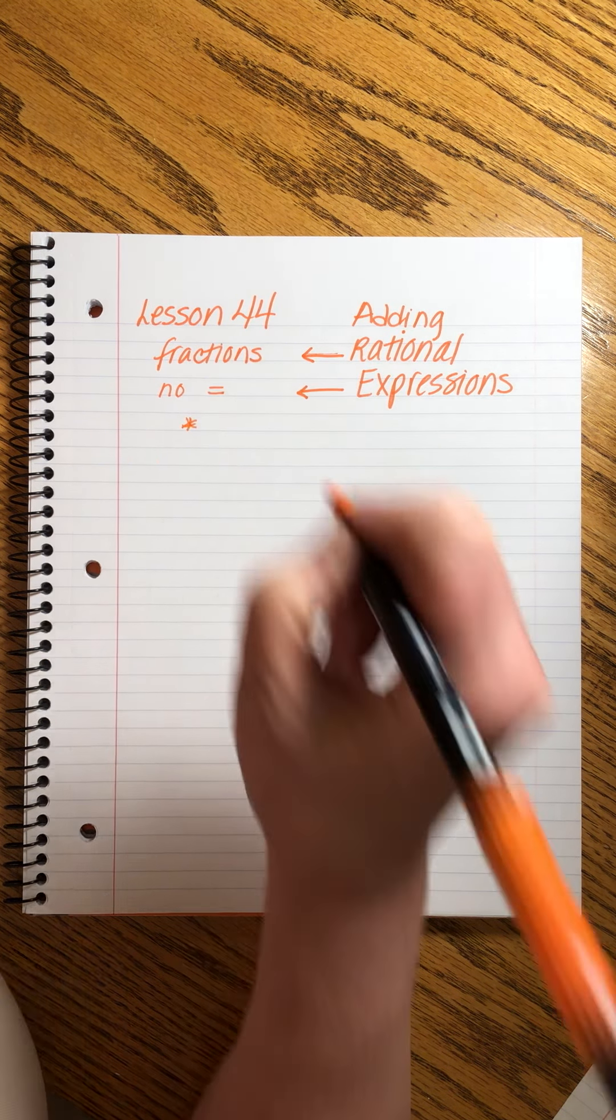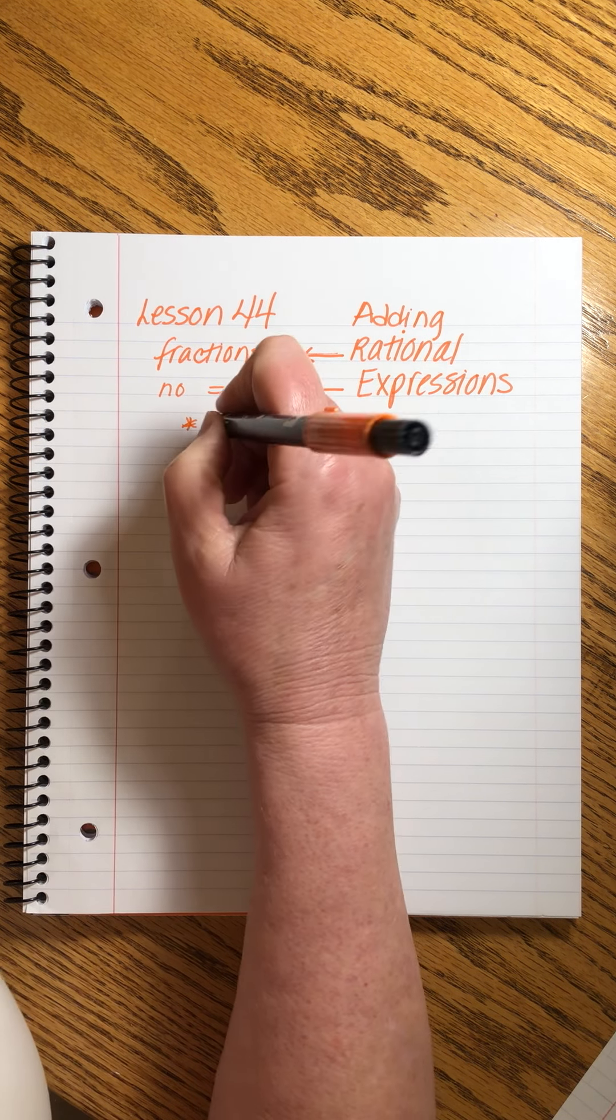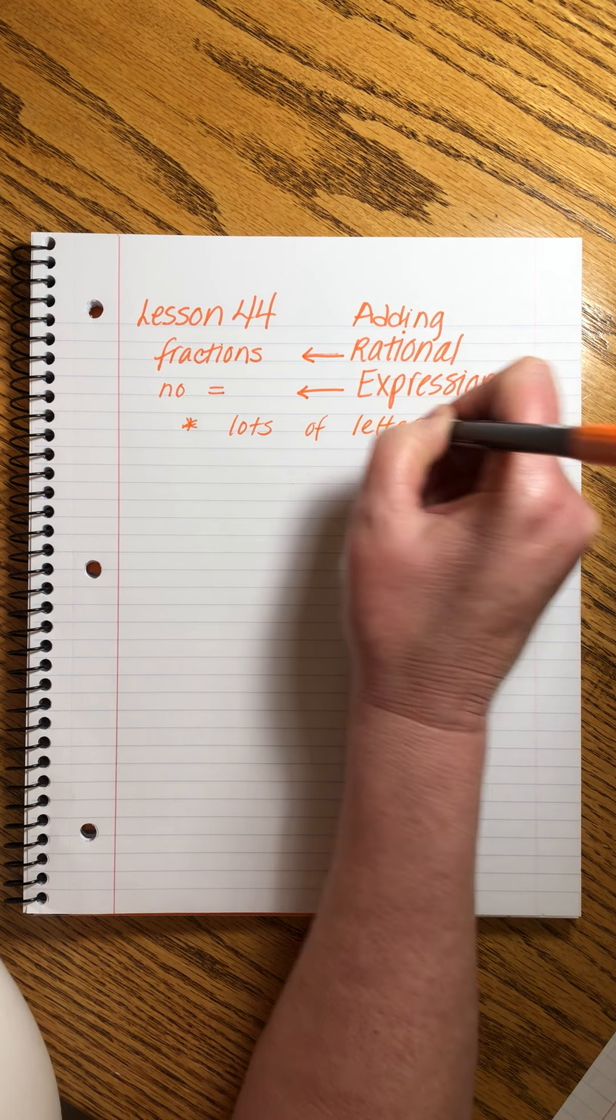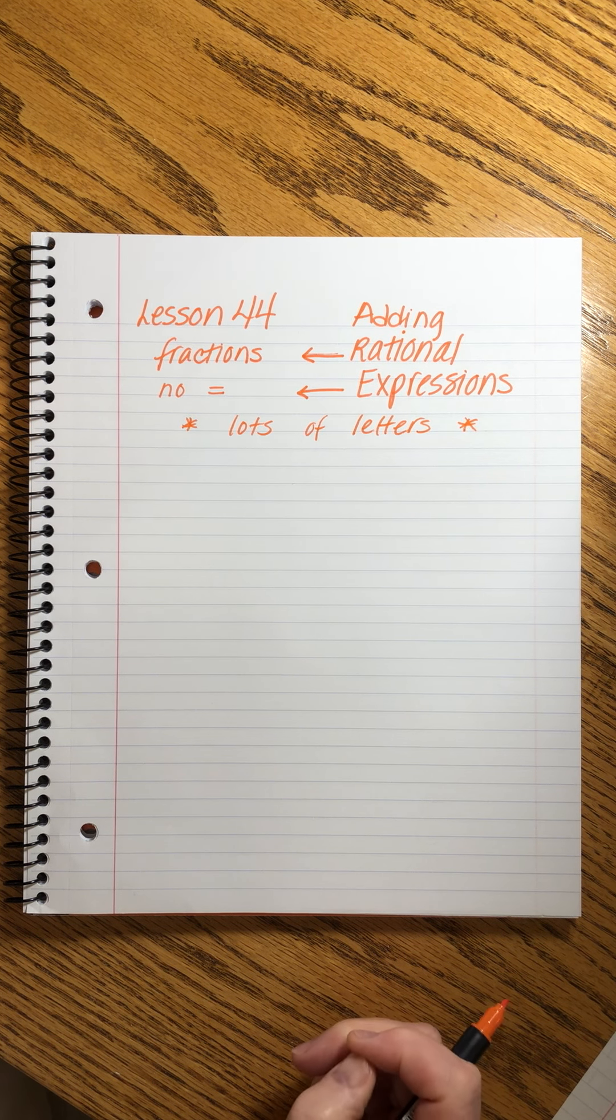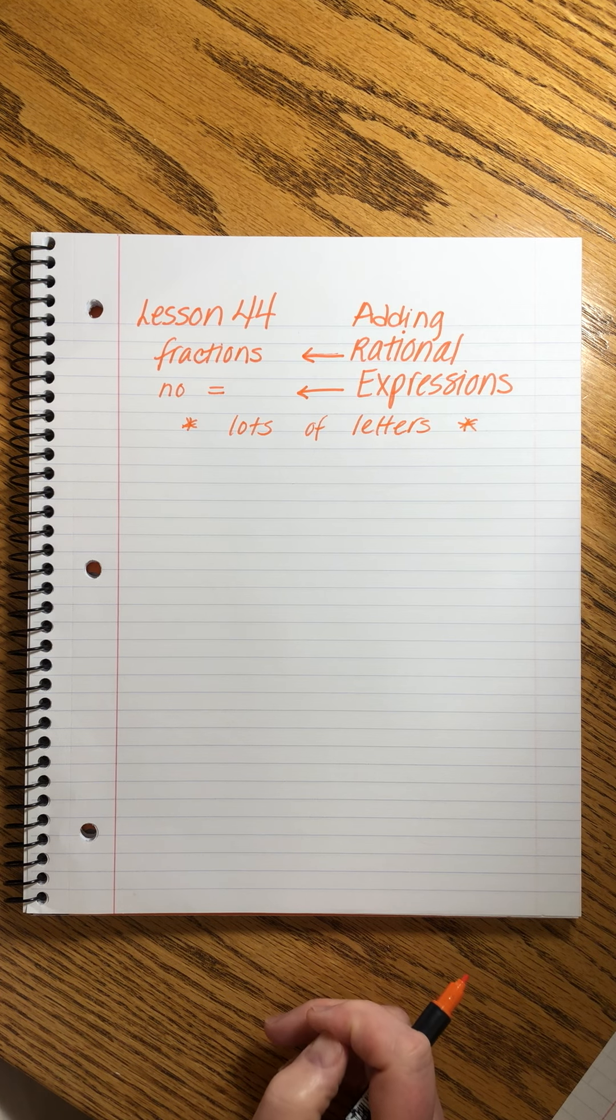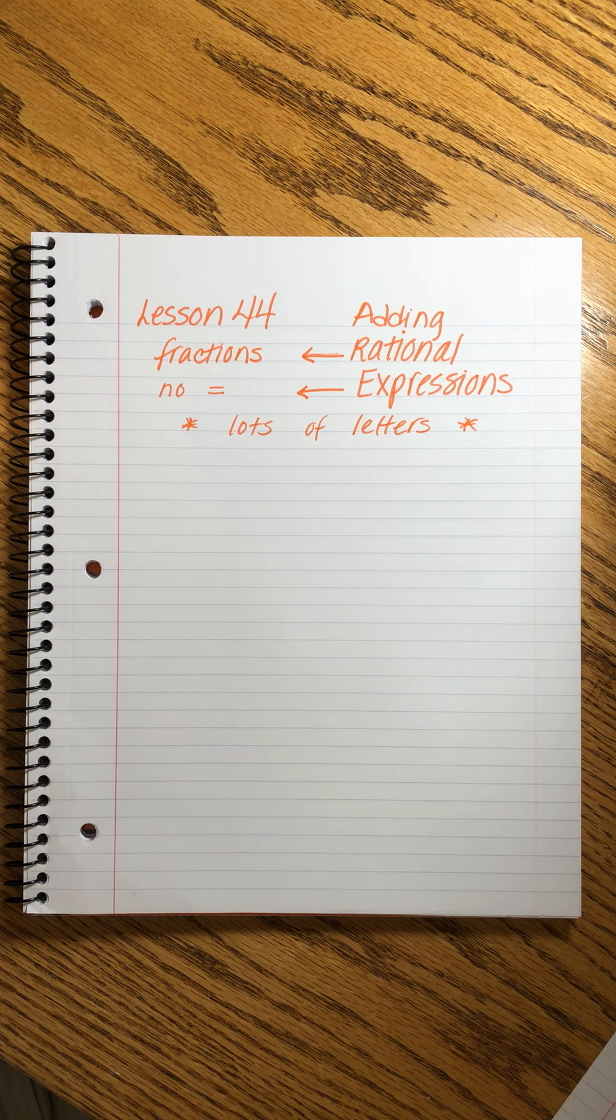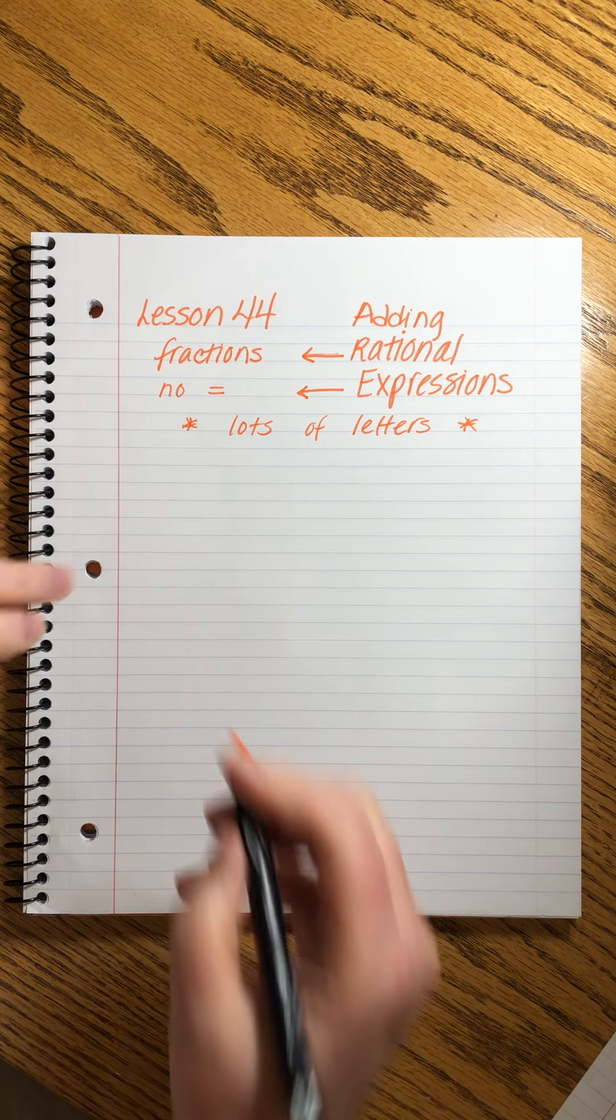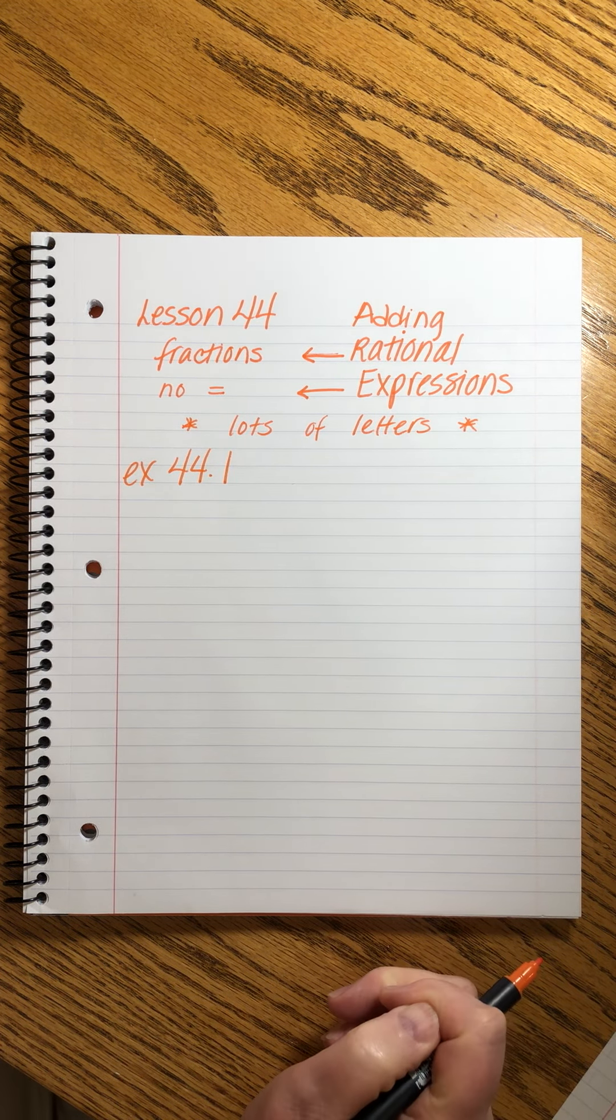And the other little teaser that I'll give you is there's going to be lots of letters. Now, at first, that probably sends a shiver down your spine, but letters can make life a lot easier. As we saw in that last lesson when we were practicing finding least common multiples, it's way easier if you just have letters with exponents. So let's dive into these. We're going to be doing this kind of problem for a long, long, long time. We'll start out fairly easy, and it'll get harder as we go.